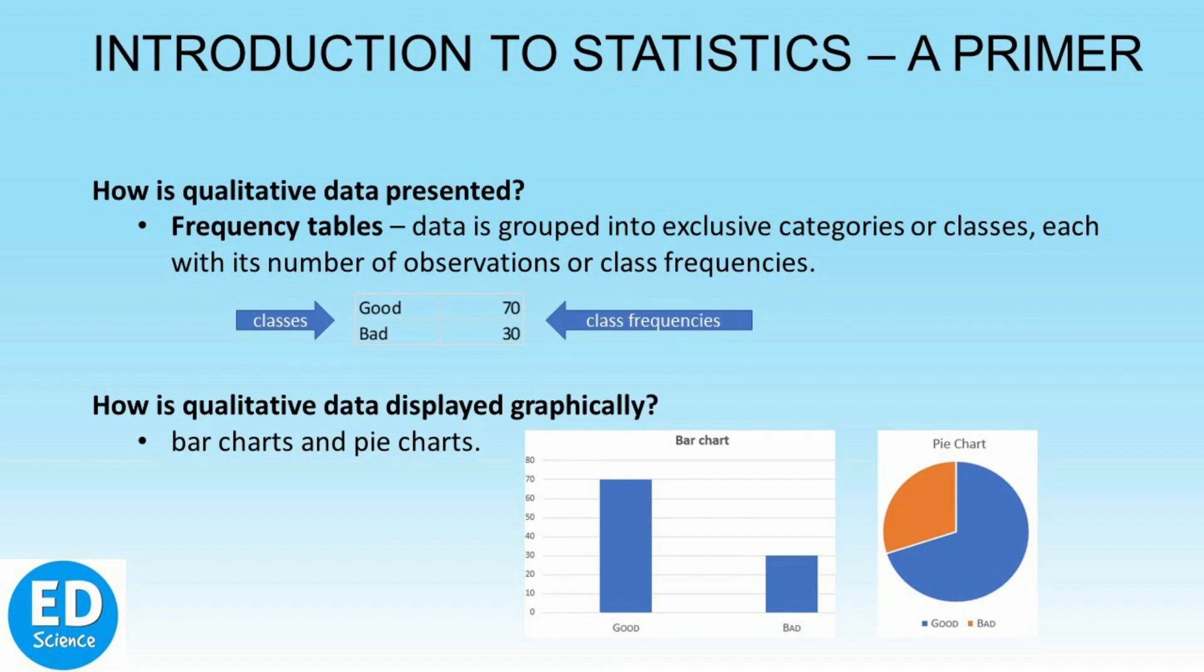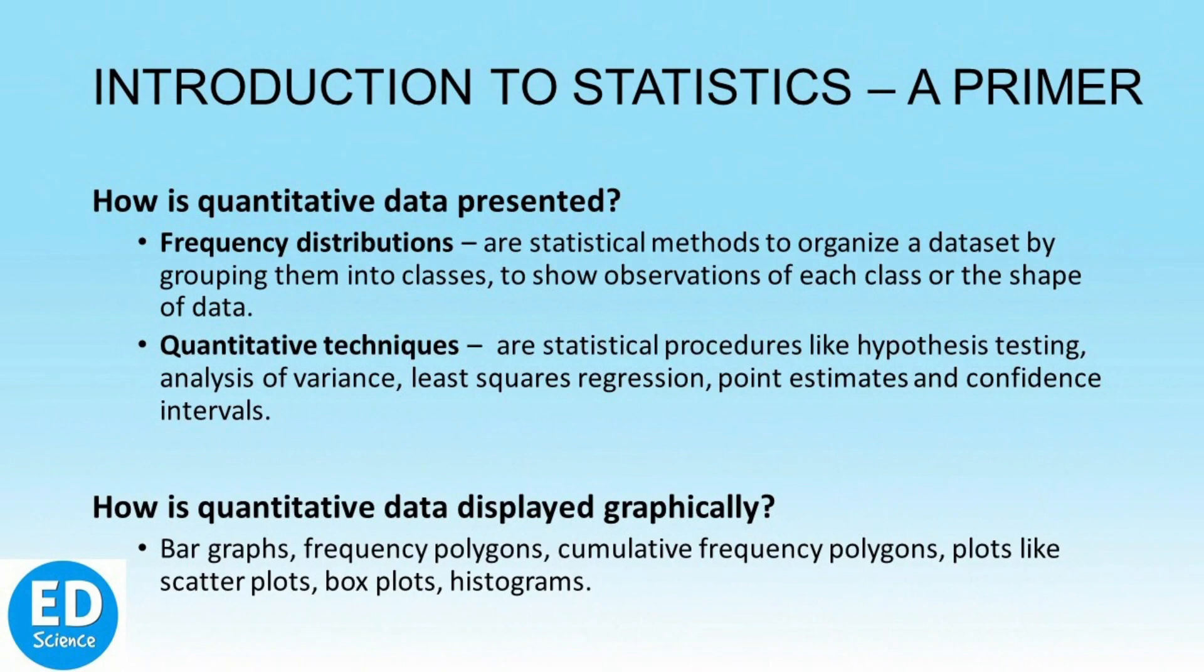Graphically, qualitative data can be displayed using bar charts where class frequencies are the bar heights, and through pie charts where class frequency is presented as the percentage of a total. Quantitative data can be presented as distributions. We can distribute the dataset into classes with observations and study the distribution. The shape of the distribution will show us where data points are concentrated, which values are outliers, and so on.